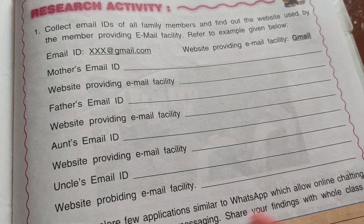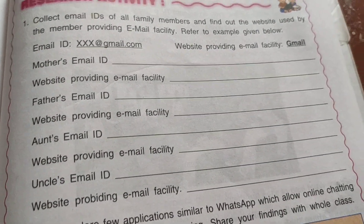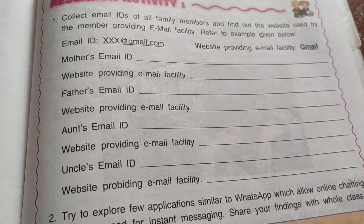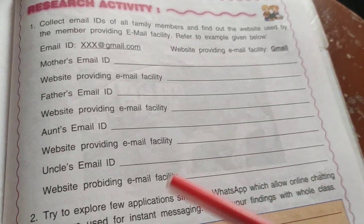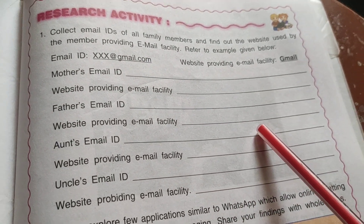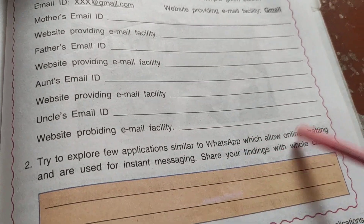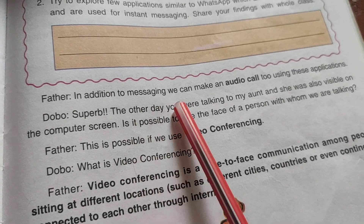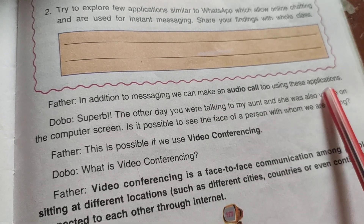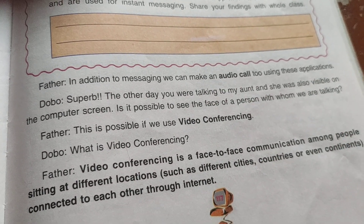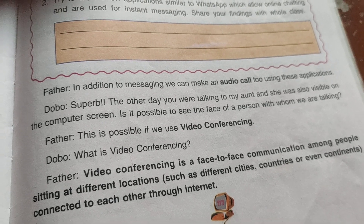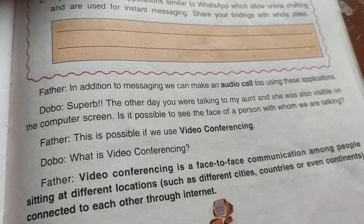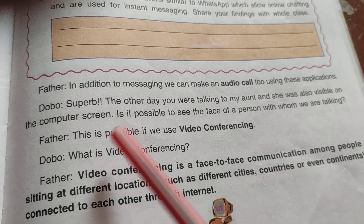Here is a research activity: you have to write down the email IDs of your father and mother and note which email facility they use — whether Google, Yahoo, etc. In addition to messaging, we can also make audio calls using these applications. As we all know, with WhatsApp we can make audio and video calls as well.